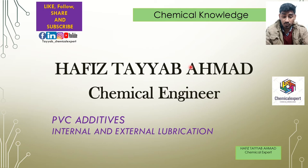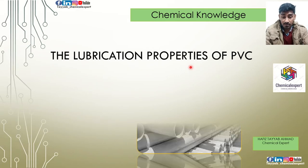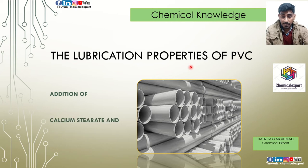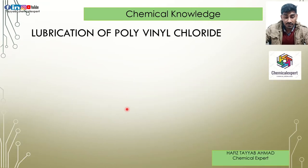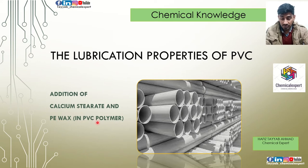Let's move on to the lubrication properties of polymers. There are two major additives that we add for lubrication: one is calcium stearate, and the other is paraffin wax. Both are added to PVC.